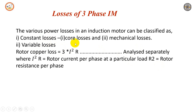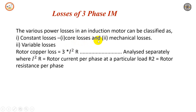Under constant losses, we have core losses and mechanical losses. Core losses occur in the stator core and rotor core, and these are also called iron losses. These losses include eddy current losses and hysteresis losses. Eddy current losses are minimized by using laminated construction, whereas hysteresis losses are minimized by selecting a suitable grade of silicon steel as a material for the stator and rotor.